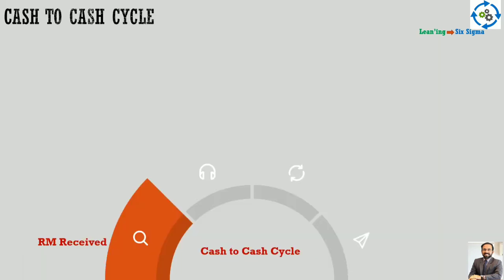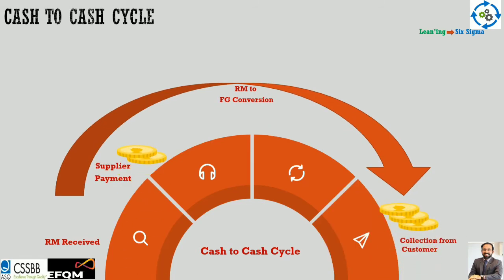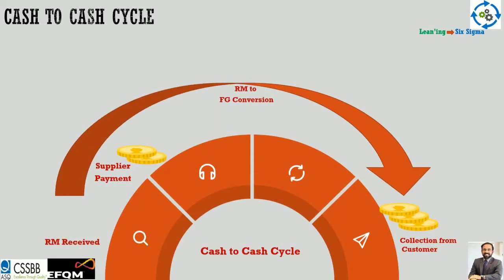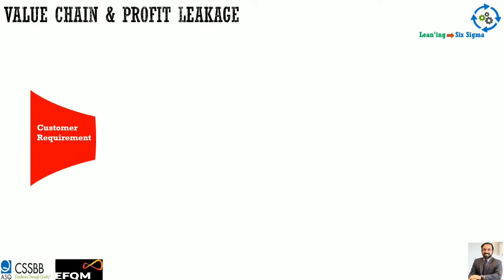This affects the cash-to-cash cycle. In a typical manufacturing organization, you pay the supplier within 30 to 60 days of receiving raw material, but poor material planning, design changes, and specification issues lengthen the conversion time from raw material to finished goods. As a result, you delay delivery, delay invoicing, and delay collection. The supplier has been paid, but the conversion process is still ongoing — the company is starving for money. Investigating the cash-to-cash cycle reveals enormous improvement opportunities directly linked to profit leakage.